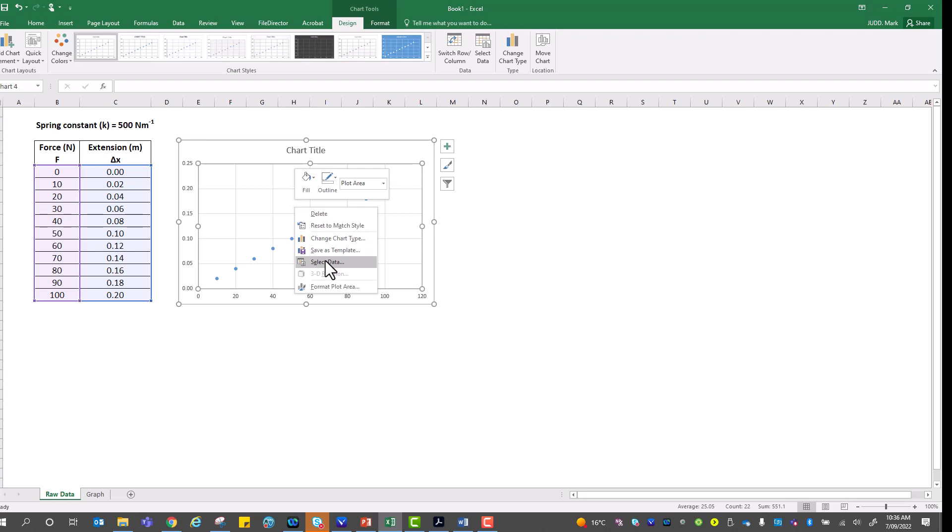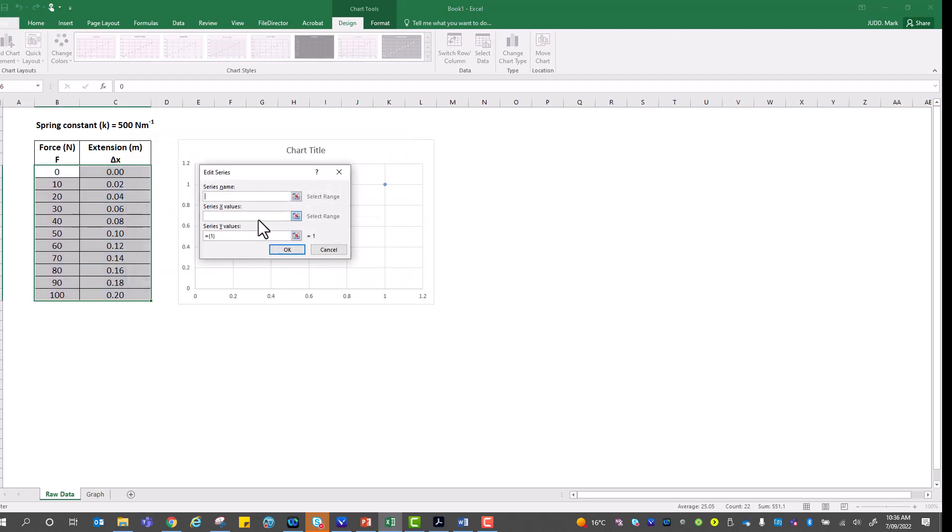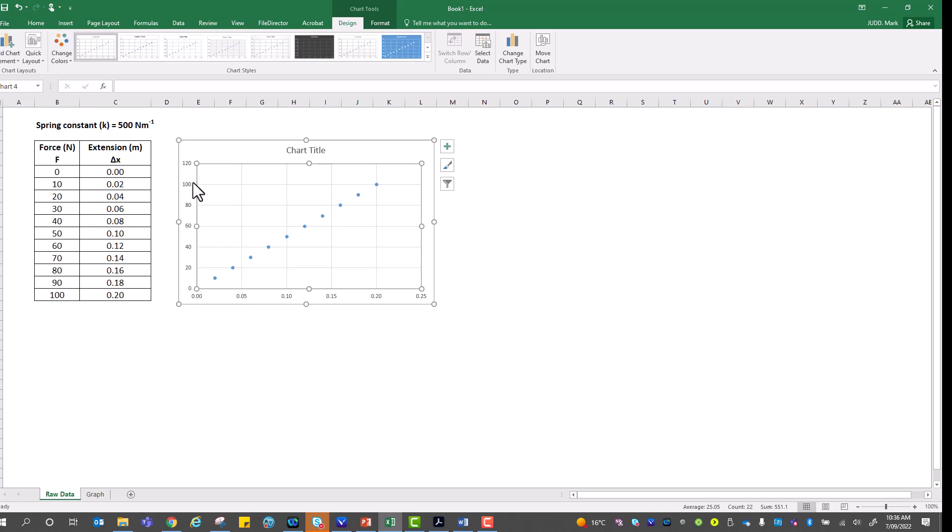One option is to reverse the order of your columns, but it's easy enough to fix this up. Let's right click on the data and select data. I want to remove what I've currently got and add a new set of data. So on my X values, which is where I want my displacement, I'll highlight my extension and return it back. And then on the Y series I want my forces. Press OK again and we can clearly see now that my vertical scale is measuring up to 120, which is my force, and my horizontal scale is measuring to 0.25 of a meter, which is my extension data.